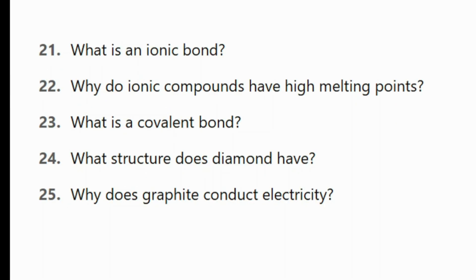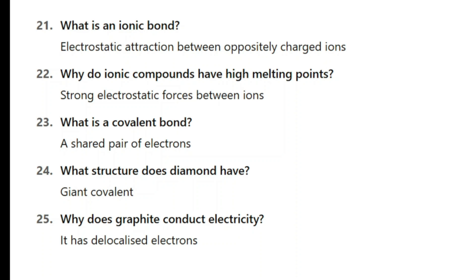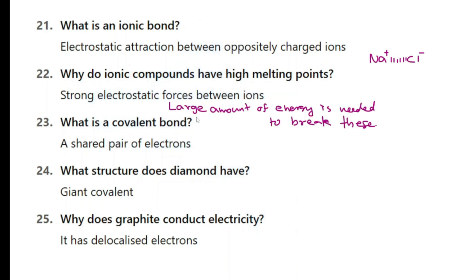Here you have questions 21 to 25. Pause the video and try these please. Here are the answers. What is an ionic bond? Electrostatic attraction between oppositely charged ions. For example, a sodium plus ion and a chloride minus ion are oppositely charged and there is a force of attraction between them. Why do ionic compounds have high melting points? Because there are strong electrostatic forces between ions and you need a lot of energy to break these bonds.